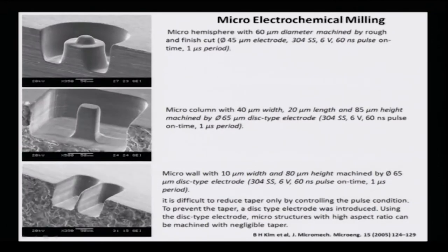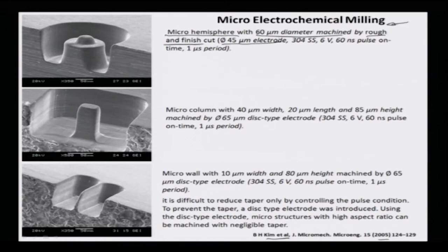Beautiful illustrations of electrochemical milling from Kim et al., published in 2005, show fabrication of a micro hemisphere with about 60 micrometer diameter machined by rough and finish cuts. The electrode is a 45 micron diameter wire of stainless steel 304, using a 6 volt, 60 nanosecond pulse on-time duration for a 1 microsecond period to achieve this feature.